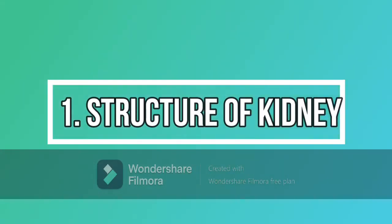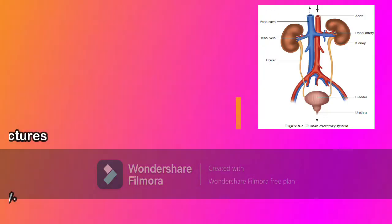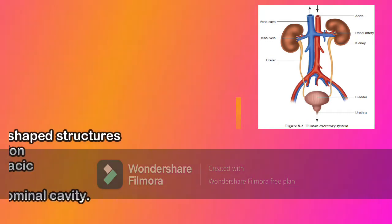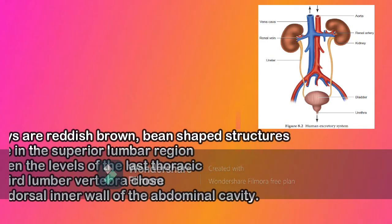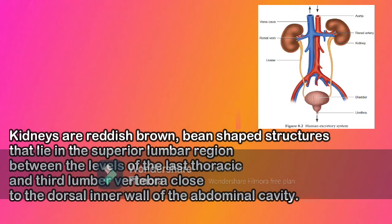Structure of the kidney. Kidneys are bean-shaped structures that lie in the superior lumbar region, between the levels of the last thoracic and third lumbar vertebra, close to the dorsal inner wall of the abdominal cavity.